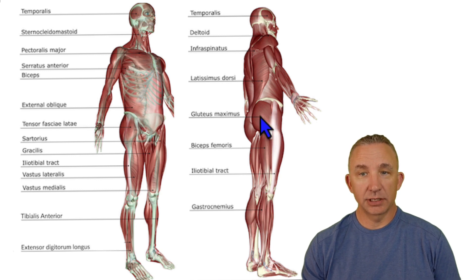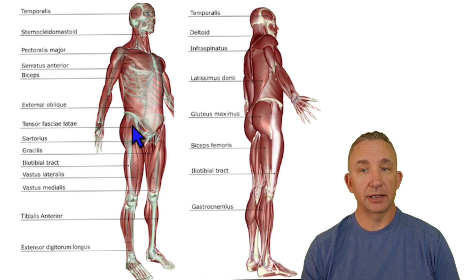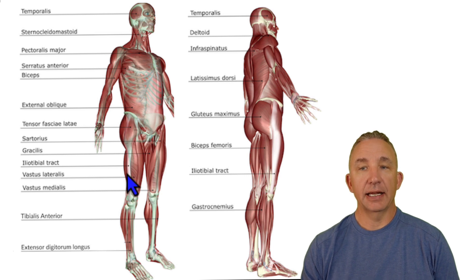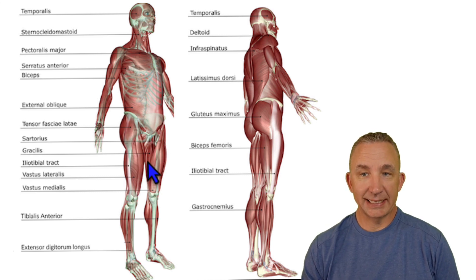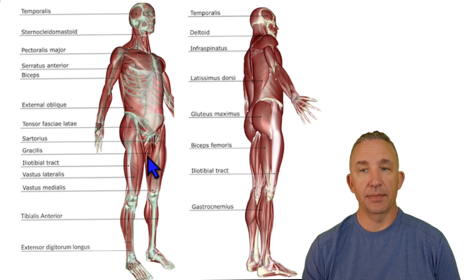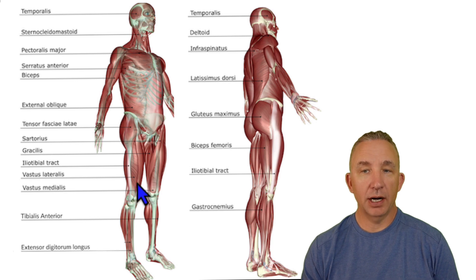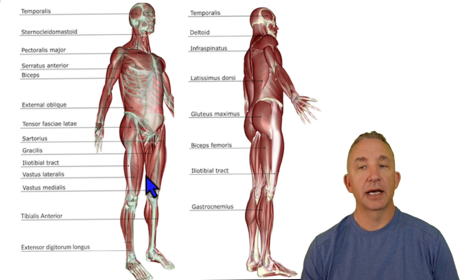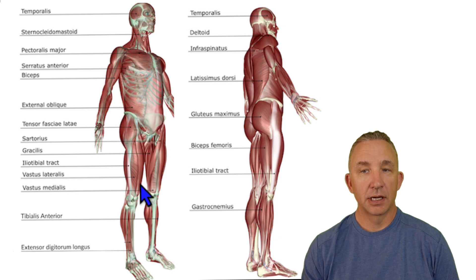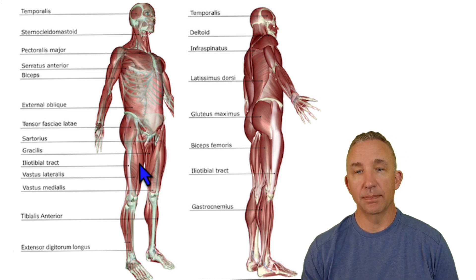Continuing with the key — buttocks: gluteus maximus. Running down on the lateral side, tensor fascia latae. Then some of my adductor muscles, which includes gracilis, the most medial thigh muscle. My longest muscle of the body, sartorius. Part of my quads: vastus lateralis, vastus medialis, and then rectus femoris on top. Deep to that would be vastus intermedius.